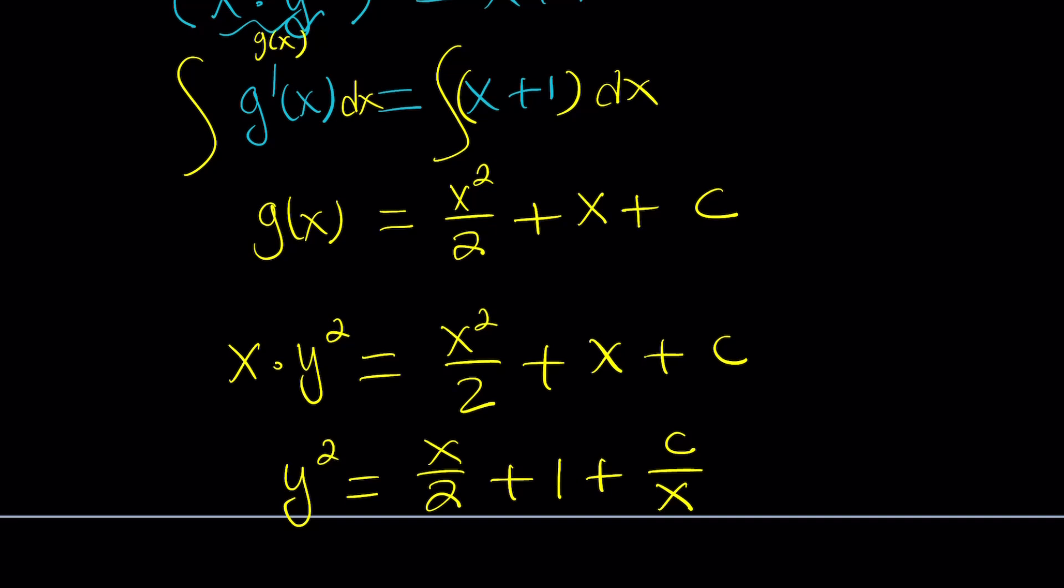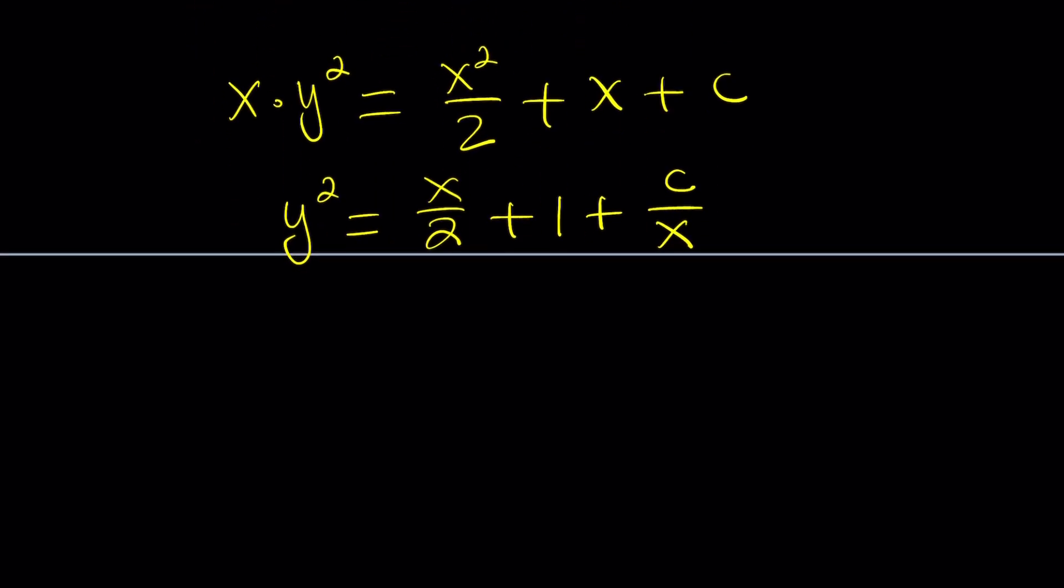So we got y², but we want to get y. How do you get it? By square rooting. But you've got to remember, when you square root y², you get two solutions: plus or minus y, or the absolute value is involved. So we can write this as y = ±√(x/2 + c/x + 1). And that will be the general solution.